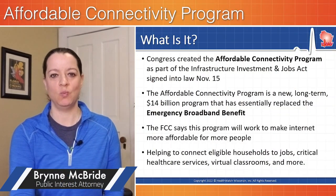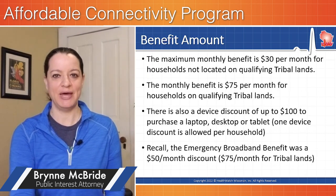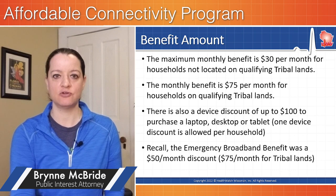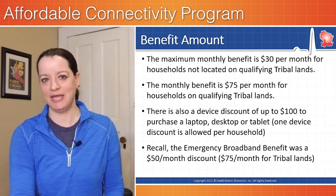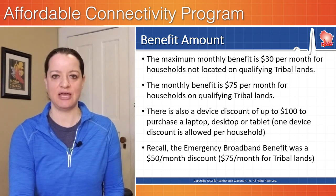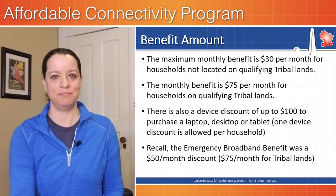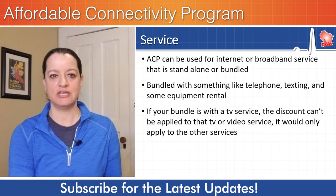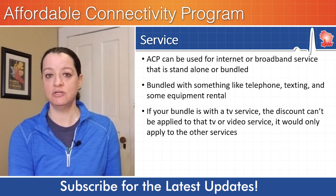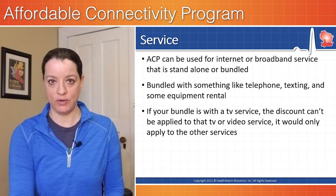The FCC's Affordable Connectivity Program will work to make Internet more affordable for more people. The benefit amount is $30 per month for households not located on tribal lands. If you are on tribal lands, it is a $75 a month discount. There is also a device discount, similar to what was part of the Emergency Broadband Benefit. The service can be used for Internet or broadband services that are either standalone or bundled with something like telephone, texting, or some equipment rental.